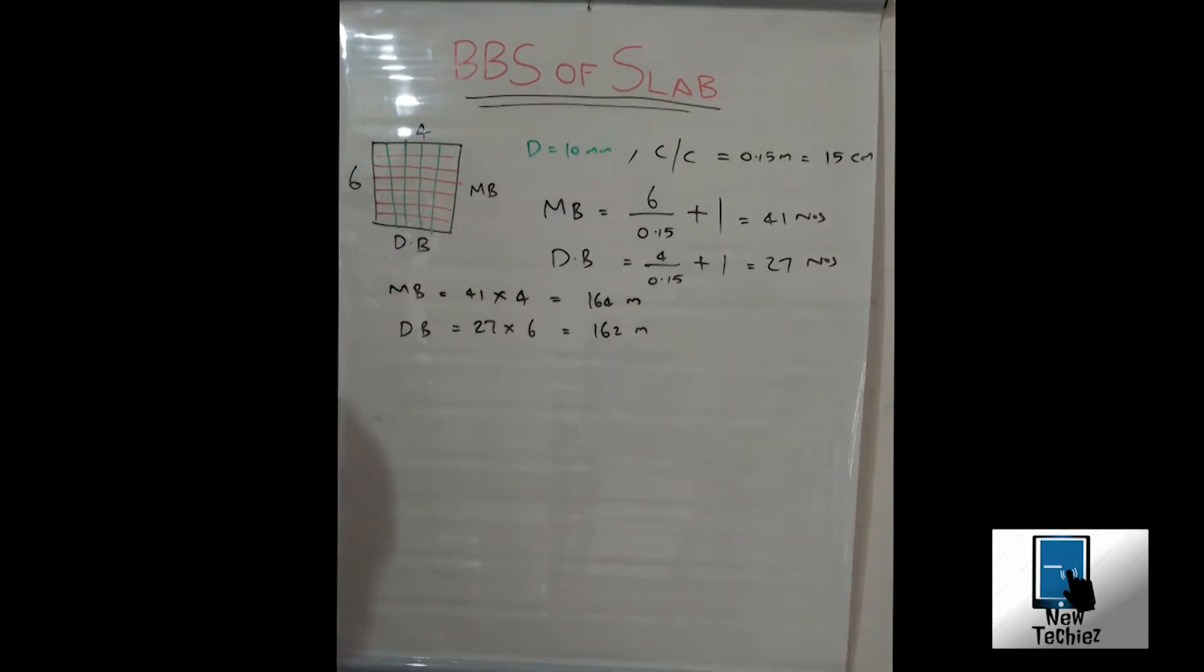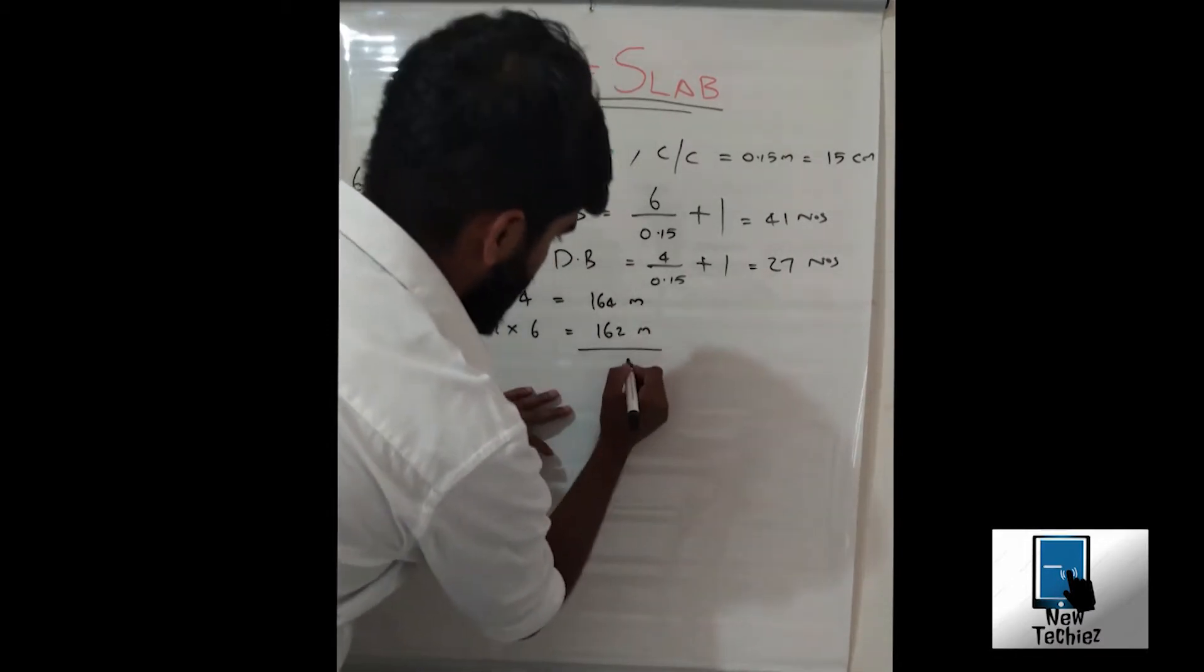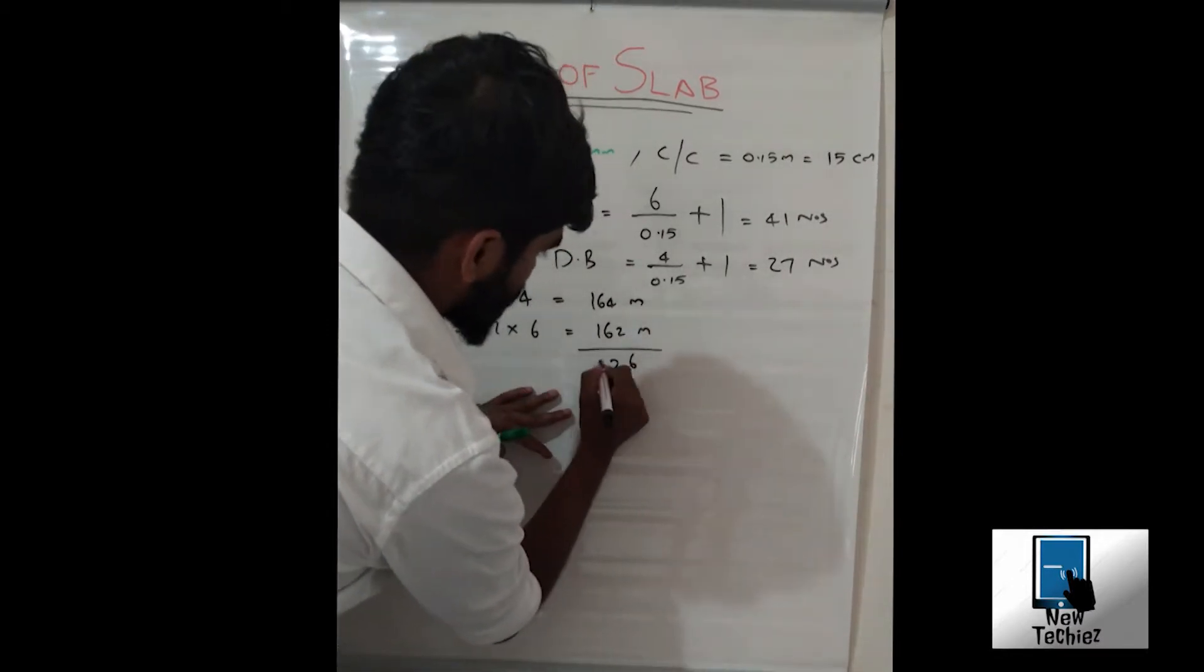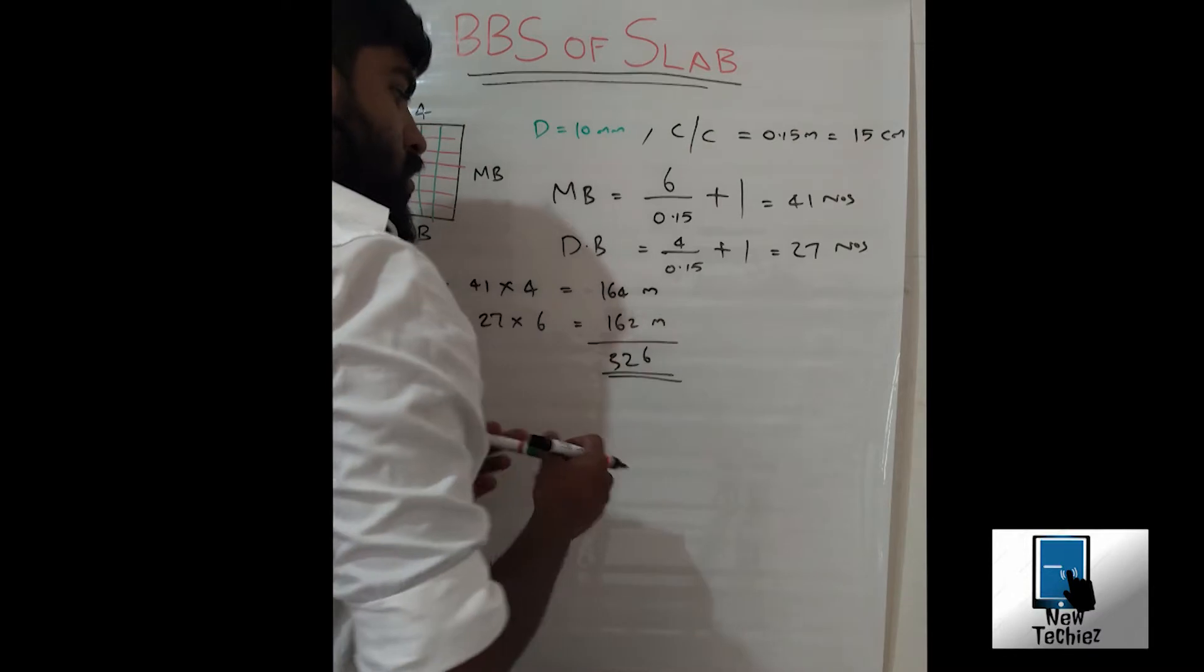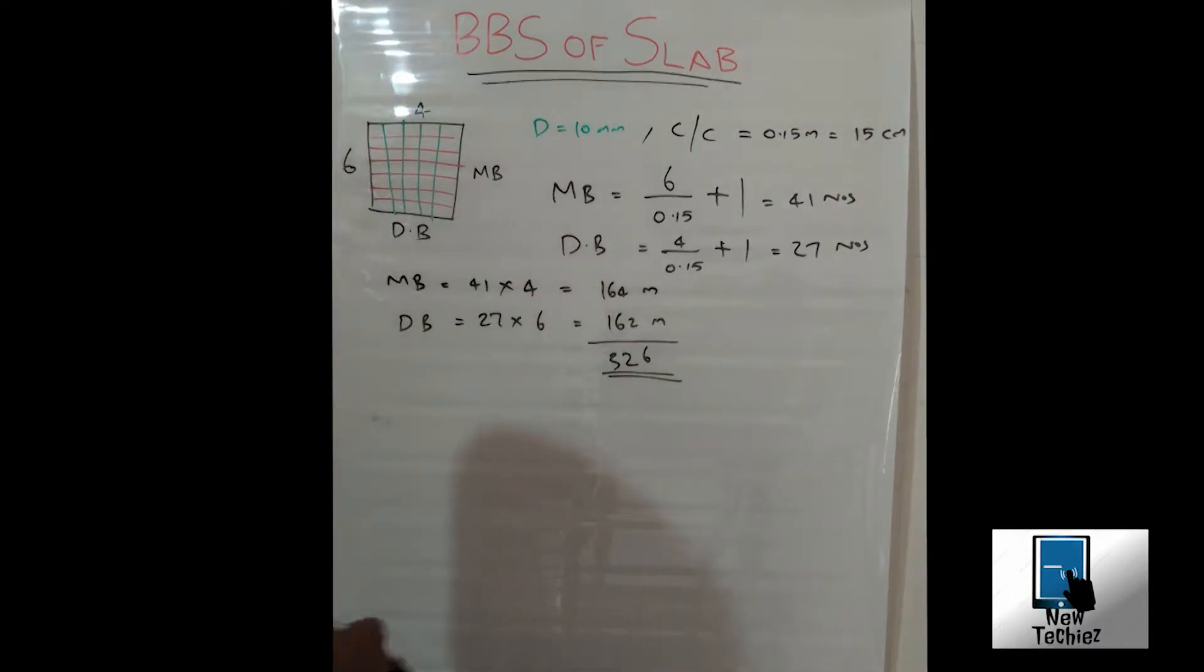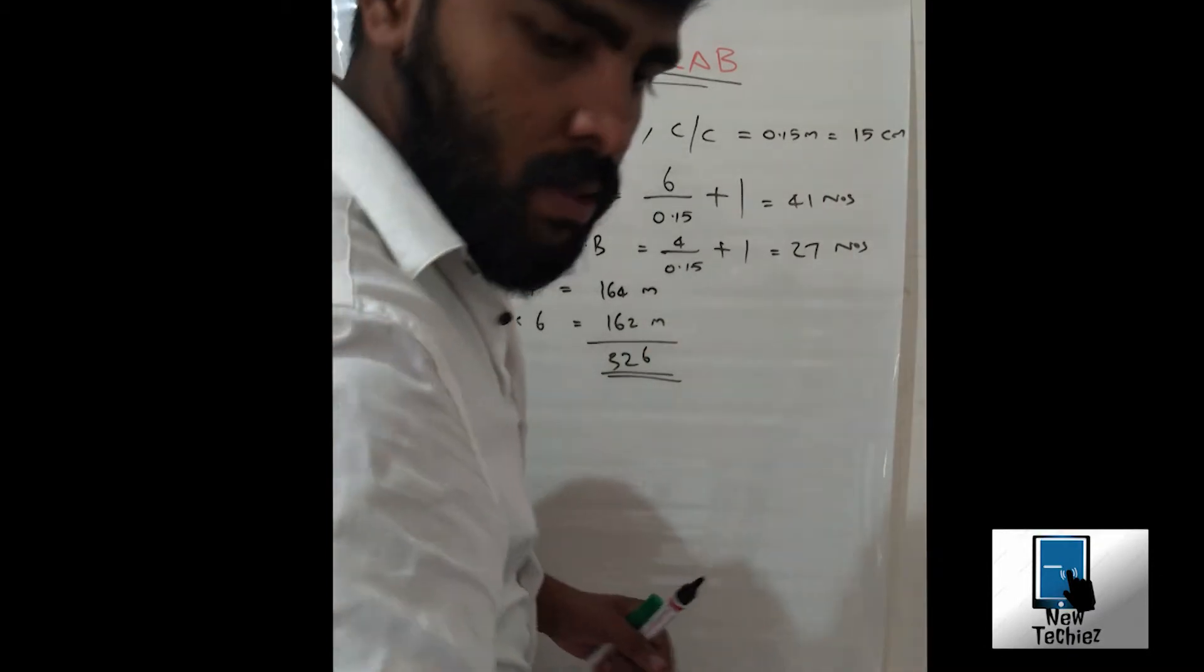Total of this is 162 plus 164, that is total 326 meters required for both main bar and distribution bar.